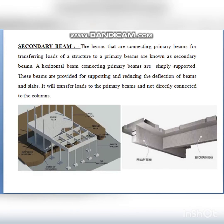Secondary beams are beams that transfer loads of a structure to a primary beam. They are horizontal beams connecting primary beams and are simply supported. Secondary beams are provided for supporting the slab and reducing deflection — that is, reducing the displacement or bending action of the beam and slab. This beam transfers loads to the primary beam and is not directly connected to the columns.